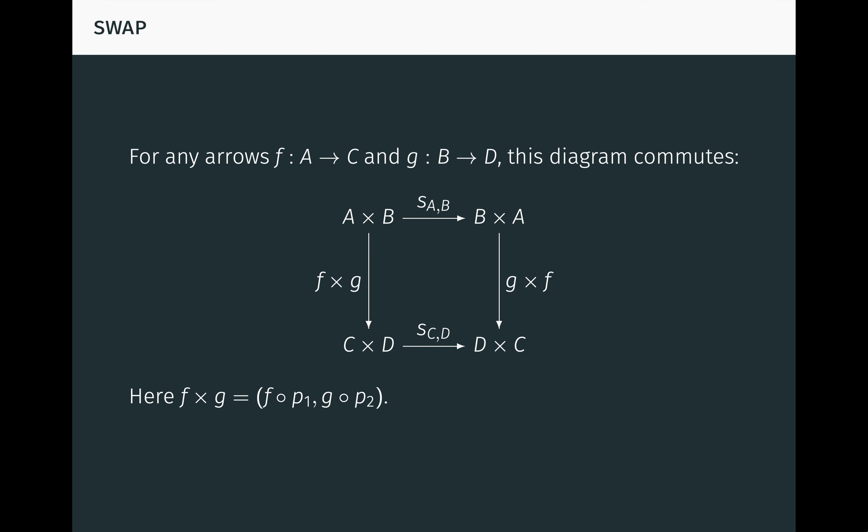Commutativity of this diagram tells us that no matter how we transform two input objects A and B to obtain output objects C and D, we can either first transform the input objects and then swap the output objects, or we can first swap the input objects and then transform them in the swapped order. We get the same result either way.